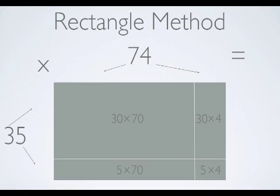We have four multiplication problems that we need to solve in order to finish the rectangle method. These multiplication problems should appear simpler than the multiplication problem 35 times 74. They require only an understanding of place value,